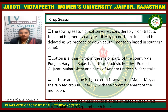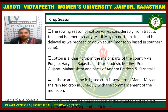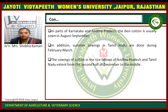Crop season. The sowing season of cotton may vary considerably from tract to tract — generally early April to May in northern India, and is delayed as it proceeds southward, being monsoon-based in the southern zone. Cotton is a kharif crop in the major parts of the country including Punjab, Haryana, Rajasthan, UP, MP, Gujarat, Maharashtra, and parts of Andhra and Karnataka. In these areas, the irrigated crop is sown from March to May and the rainfed crop in June to July with the commencement of the monsoon. In parts of Karnataka and Andhra, the desi cotton is usually sown in August to September. Summer sowing in Tamil Nadu is done during February to March. The sowing of cotton in the rice fallow of Andhra and Tamil Nadu extends from the second half of December to mid-January.